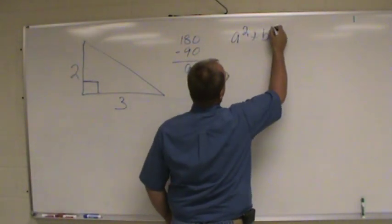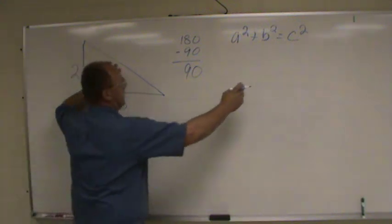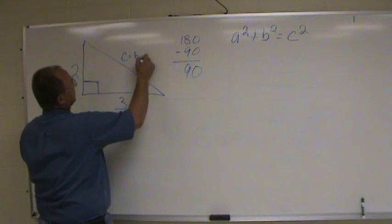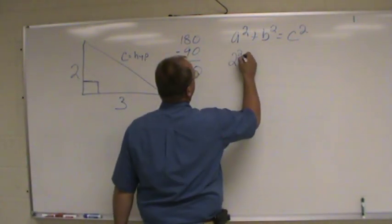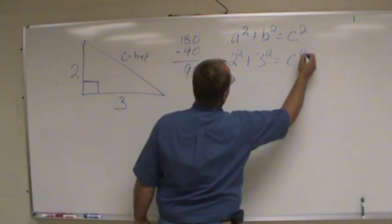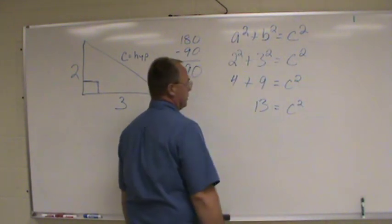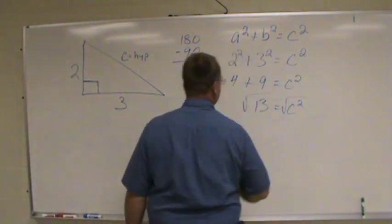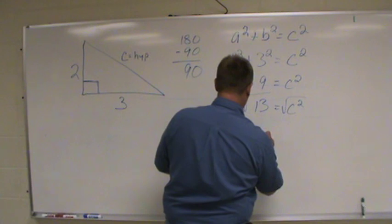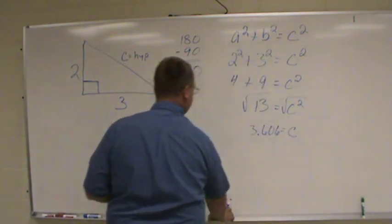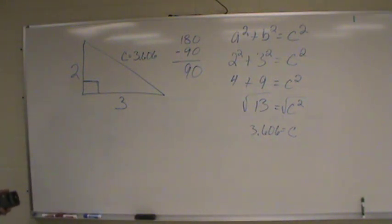All these formulas with sine, cosine, and tangent pretty much work off the Pythagorean theorem, which is a² + b² = c². The c is always your hypotenuse. To figure this out: 2² + 3² = c², so 4 + 9 = 13 = c². To get rid of that square, you take the square root of 13, and you end up with c = 3.606.